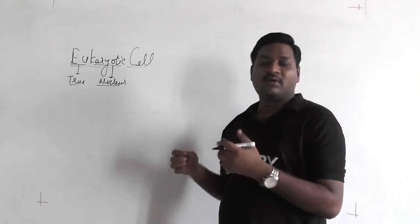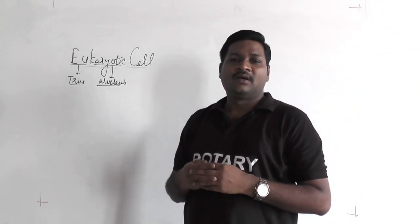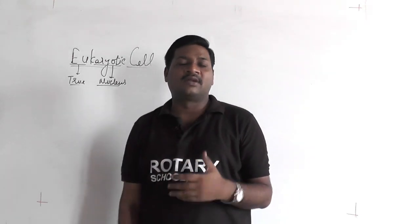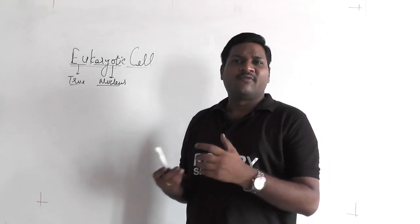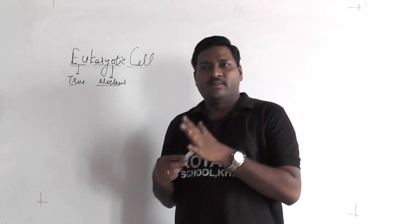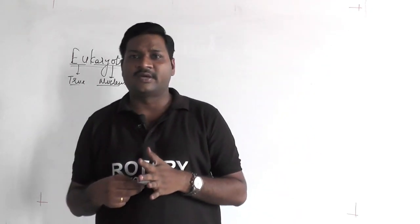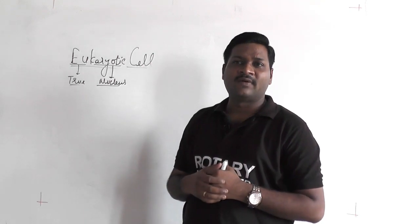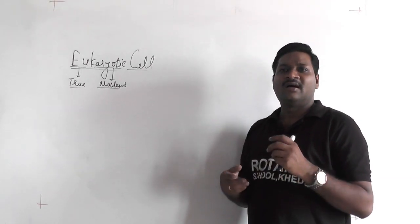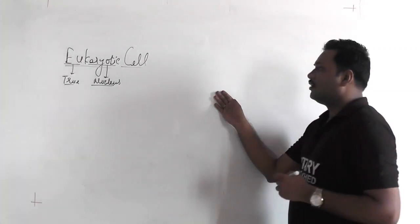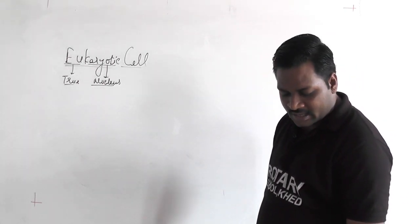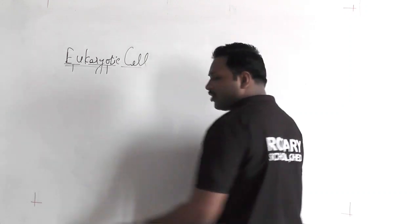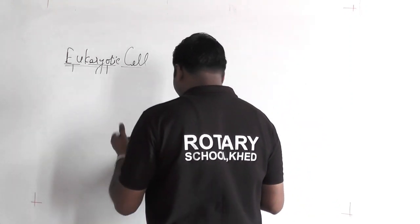Eukaryotic cells are highly developed cells. They can form multicellular animals or multicellular plants. The cell wall composition may differ among eukaryotes, and in some cells the wall is absent. The eukaryotic cell consists of two types: plant cell and animal cell. Here we are going to discuss the plant cell first.